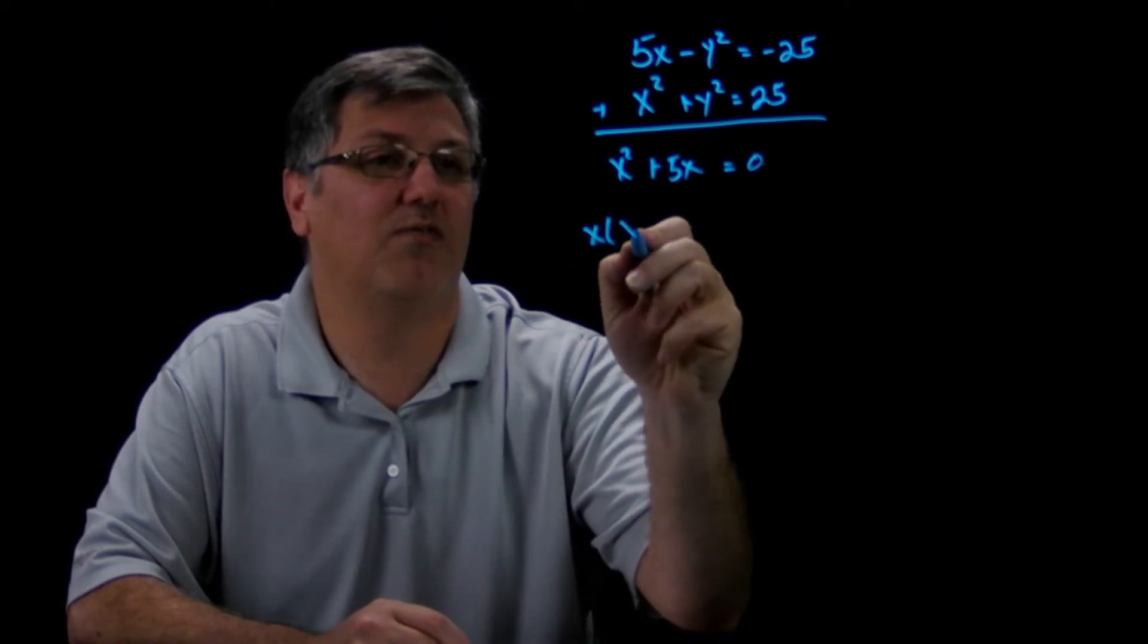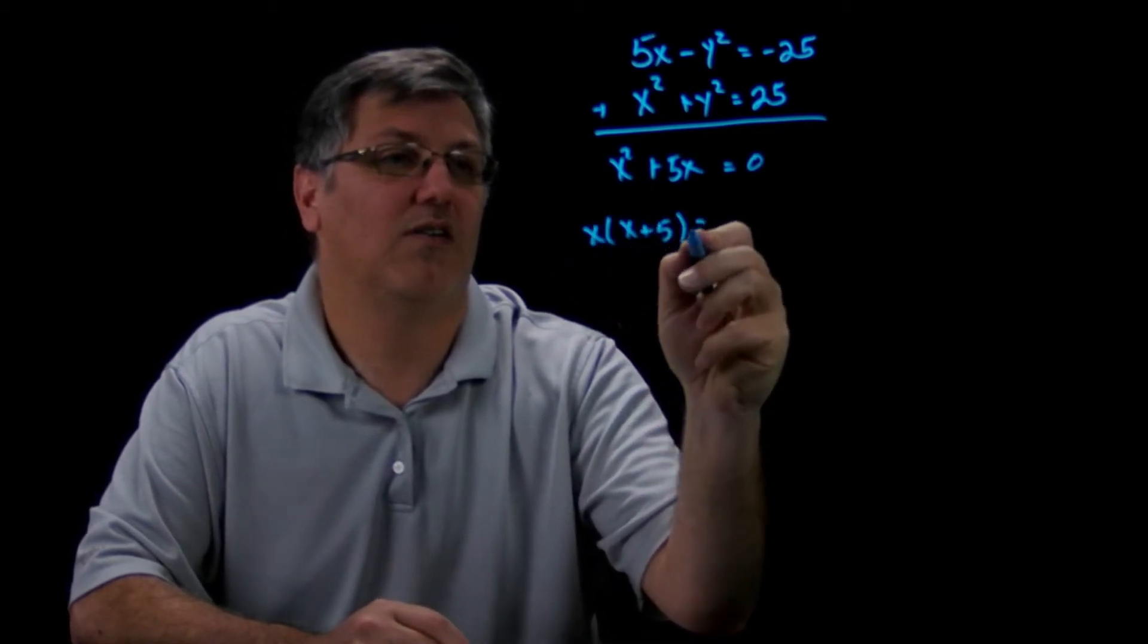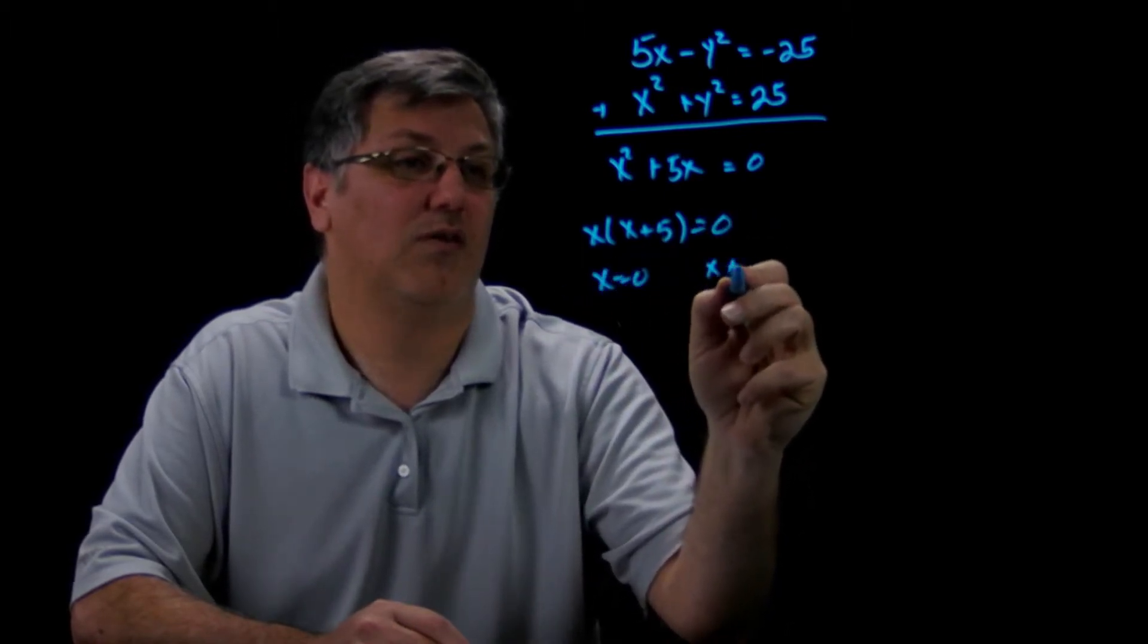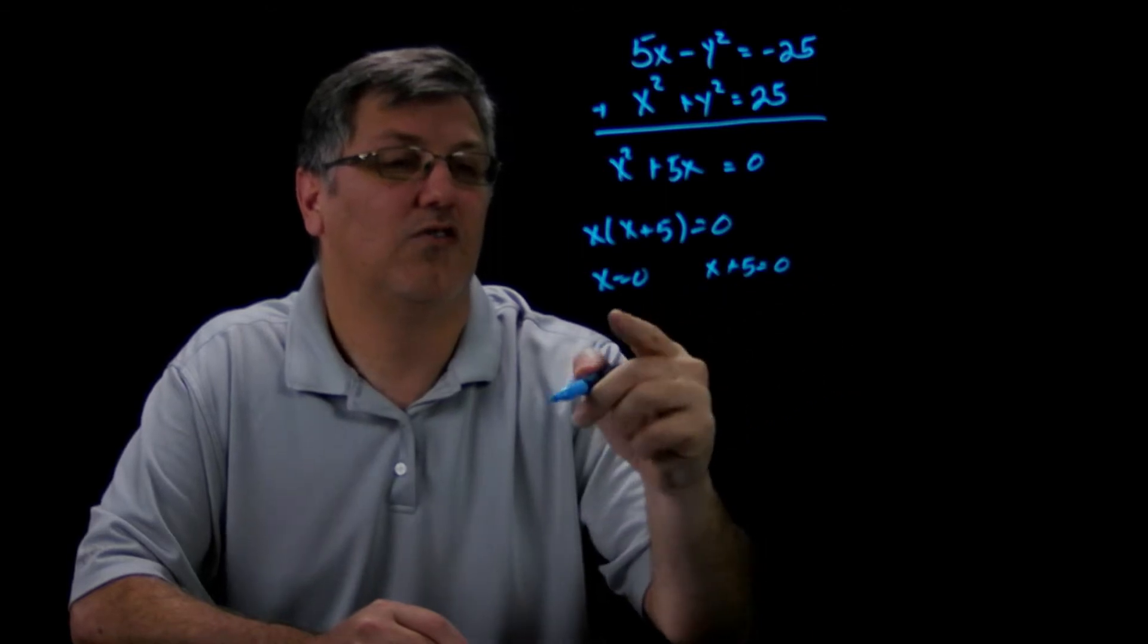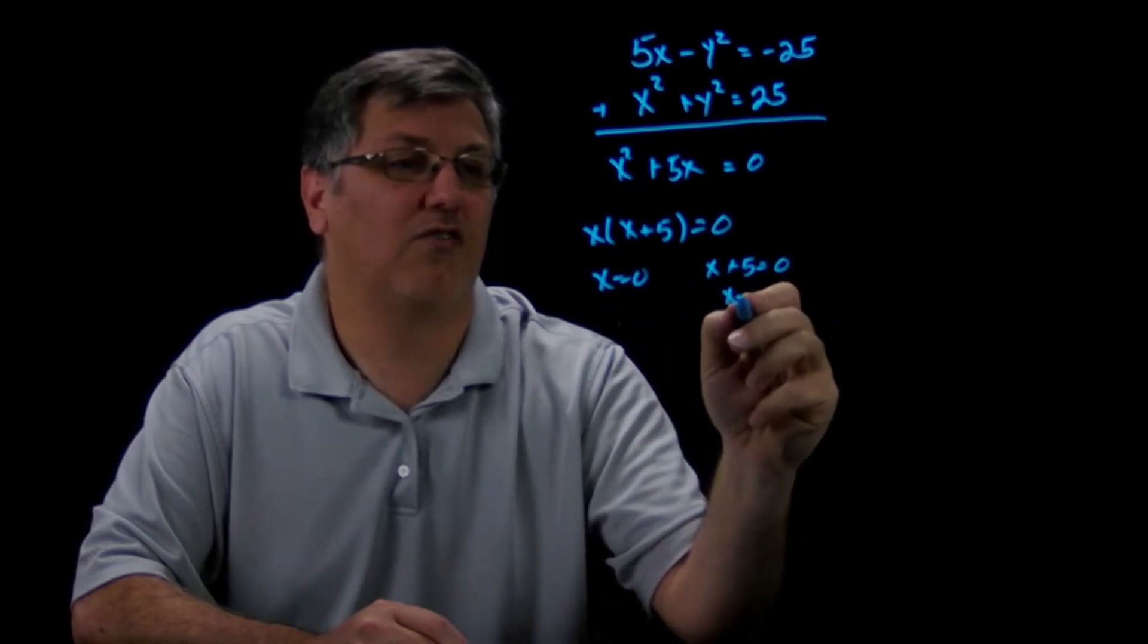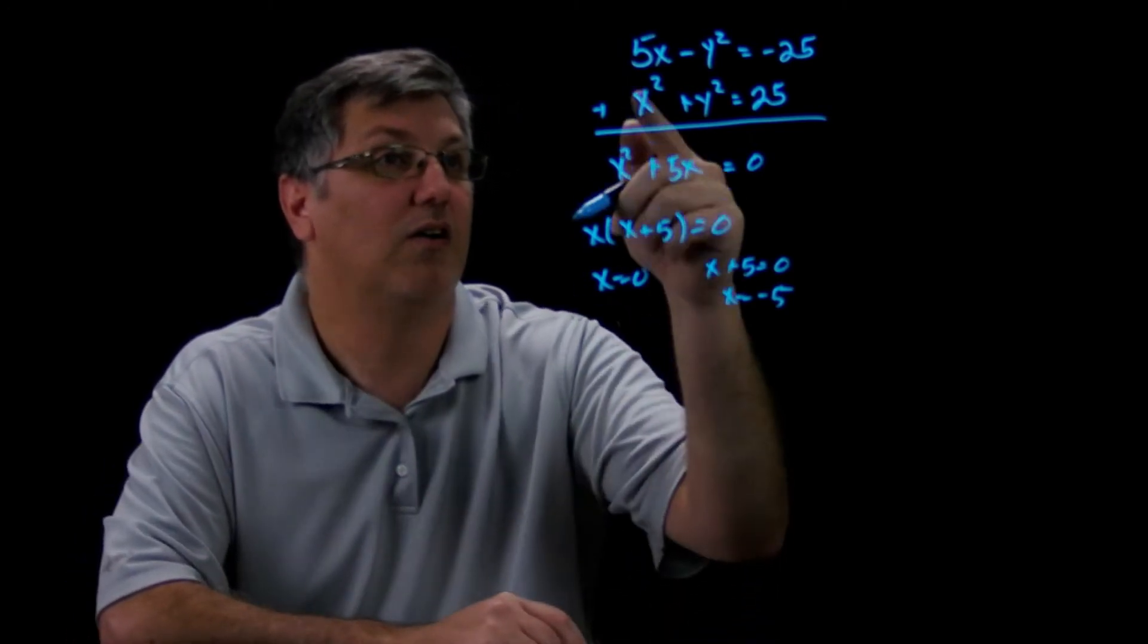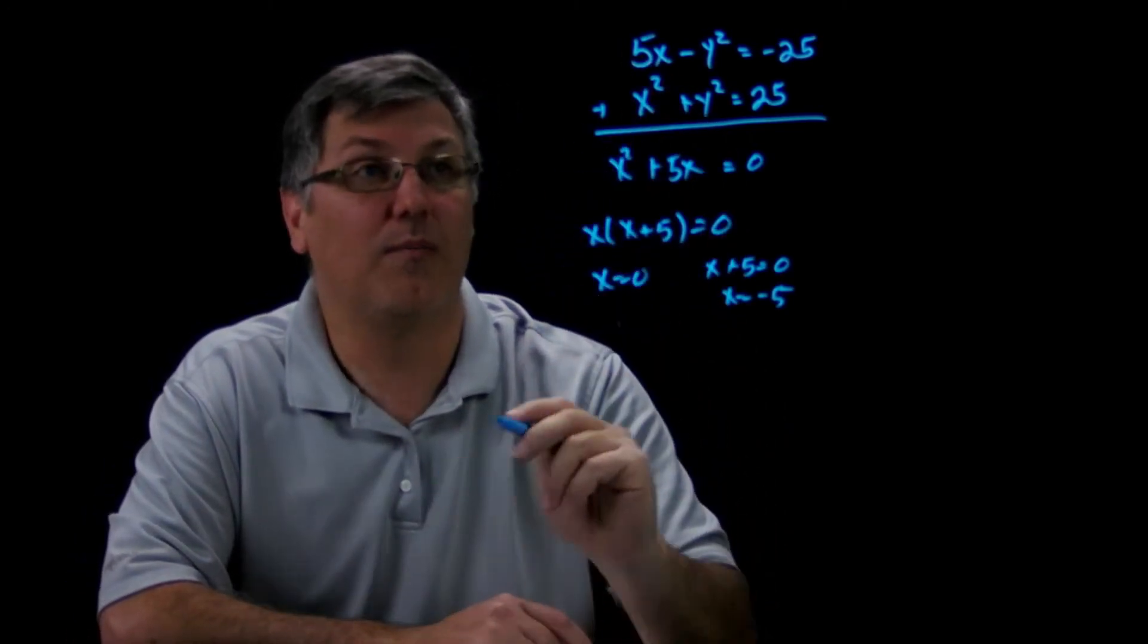Now I just have a GCF problem. I can factor out my GCF, set both of these equal to zero. So we can see x is going to equal zero and x is going to equal negative 5.